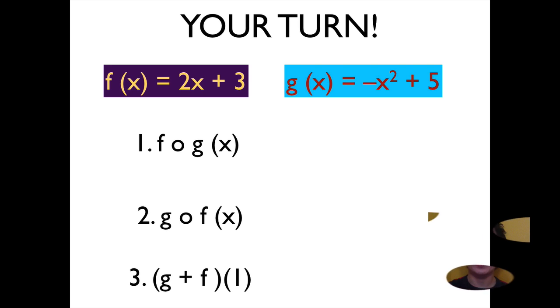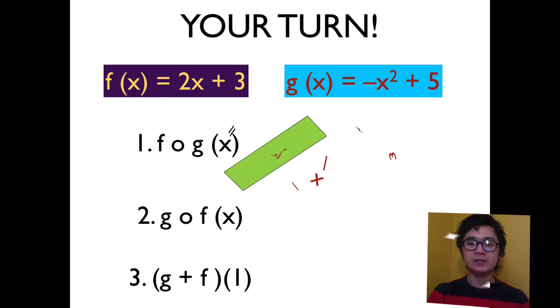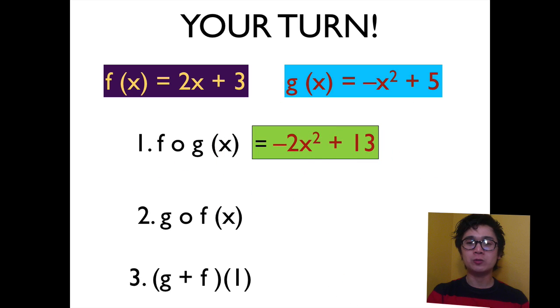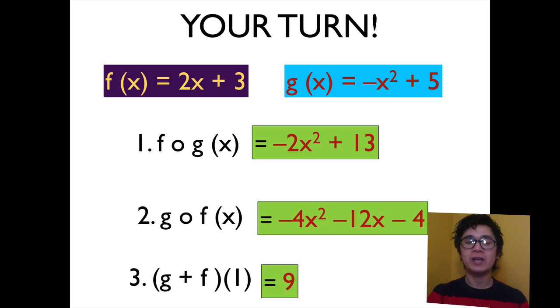If you have the right answer, for number 1, f of g of x is equal to negative 2x squared plus 13. And for number 2, g of f of x is equal to negative 4x squared minus 12x minus 4. And for the last one, g plus f of 1 is equal to 9.